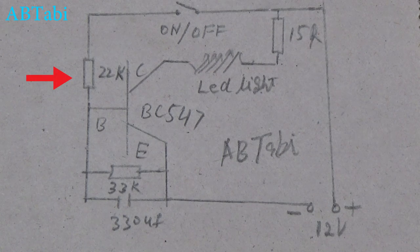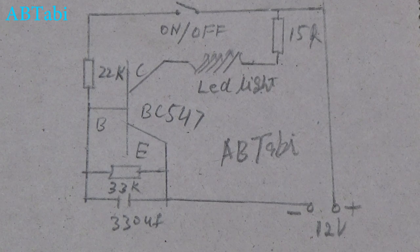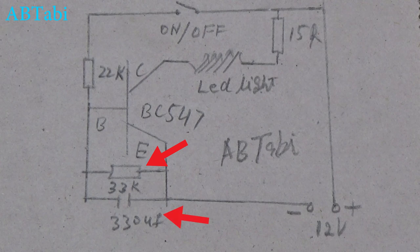After that, when switch off, 33k resistor discharges the capacitor in slow mode. In the result, LED lights fade off. Here 15 ohms 1 watt resistor is used as protection for LED lights.